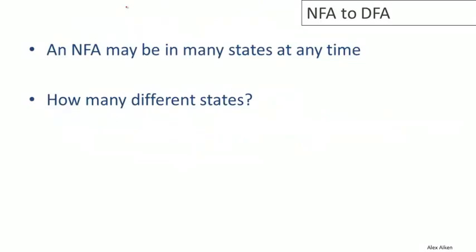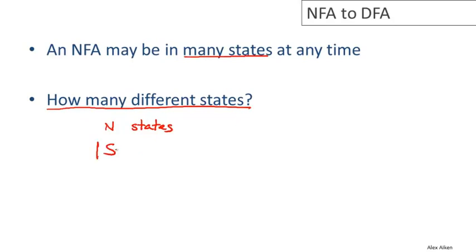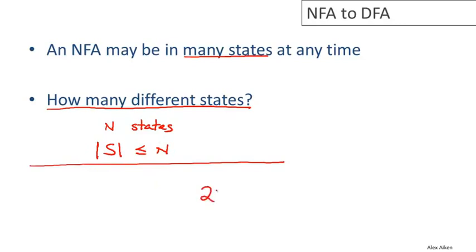Recall from the last video that an NFA may be in many states at any given point in time, because of the choices it can make — for a given input, an NFA may reach multiple different states. The question we want to address is: how many different states can it be in? If a non-deterministic automaton has n states and it winds up in some subset of those states S, the cardinality of that set has to be less than or equal to n. So the NFA can get into at most n different states. If instead I want to know the number of different subsets, there are 2 to the n minus one possible subsets of n states.